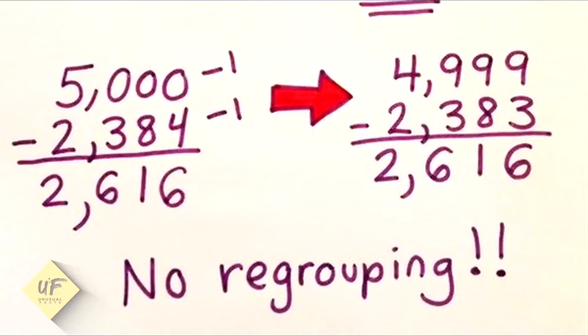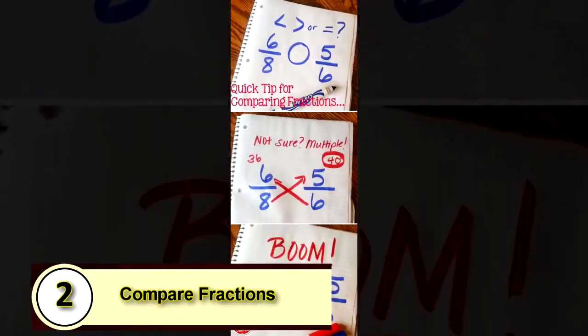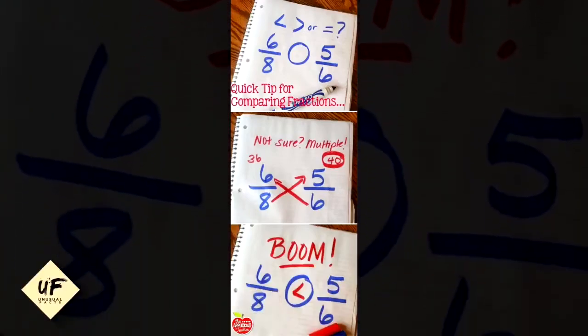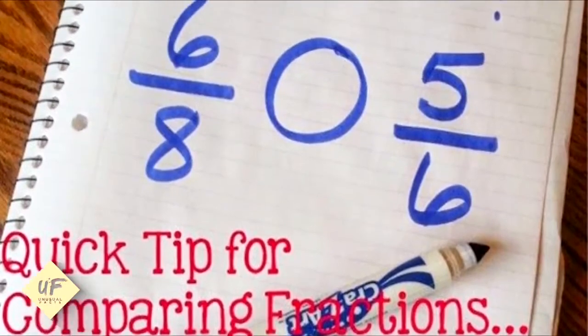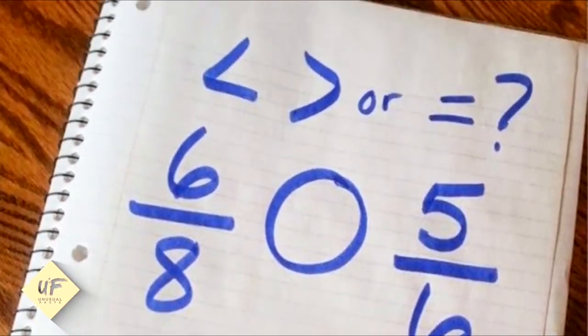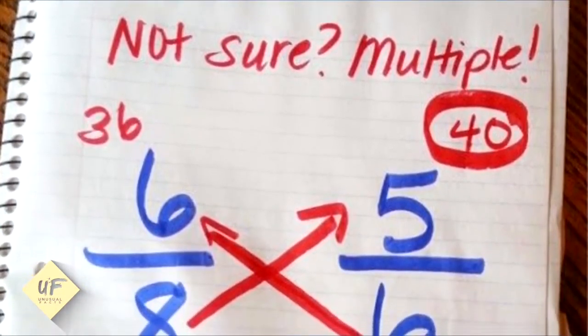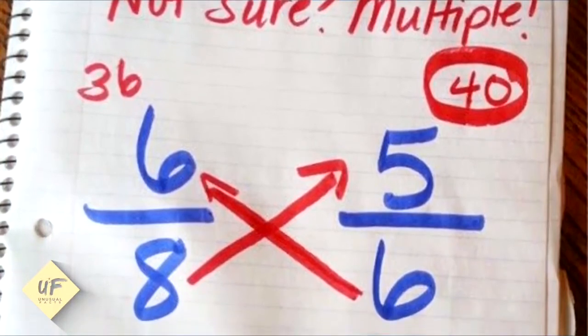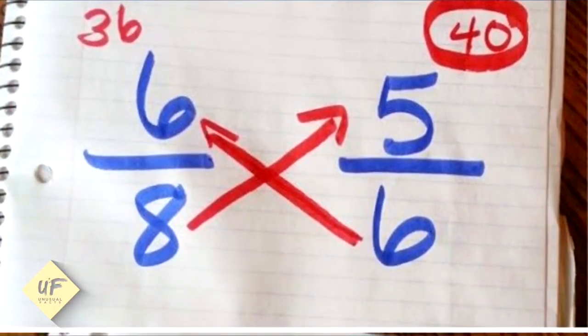Number two: how to compare fractions easily. Is it less than, greater than, or equal to? Here's a quick tip for comparing these fractions. If you're not sure, cross multiply. Six times six is 36, eight times five is 40.